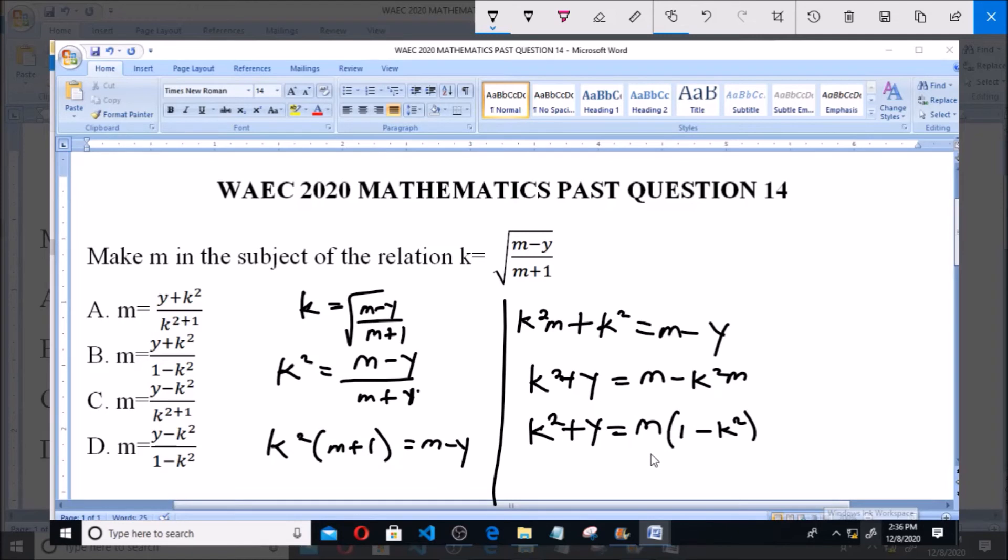So now the next thing is to divide both sides by (1 minus k squared), which is the coefficient of m. So (1 minus k squared) over (1 minus k squared) will cancel, leaving m. Therefore, m equals (k squared plus y) over (1 minus k squared), and that is option B.